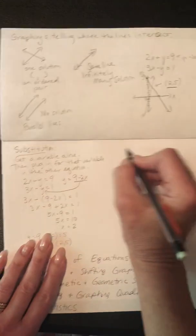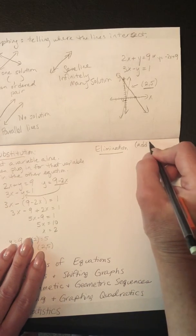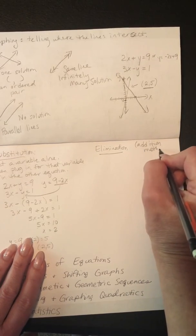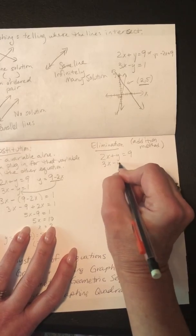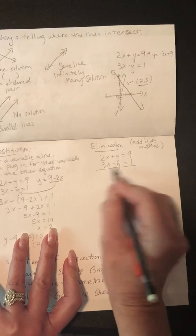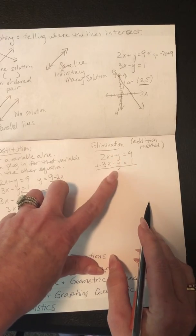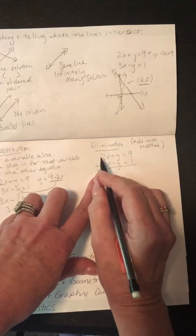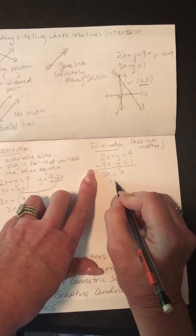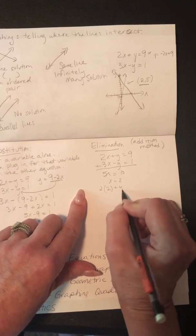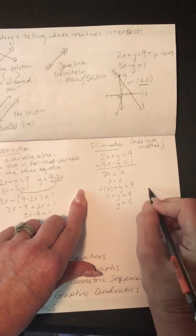The third way is elimination — some people call it the addition method — and that's my favorite. With 2x plus y equals 9 and 3x minus y equals 1, if you add them up, the y's simply disappear. If that doesn't happen, you multiply one or both equations by something so that when you add them, something disappears. Here it easily disappears: 2x and 3x is 5x, the y's cancel, and 9 and 1 is 10, so x equals 2. Then plug back in: 2 times 2 plus y equals 9, so 4 plus y equals 9, so y equals 5. You still get 2 comma 5.